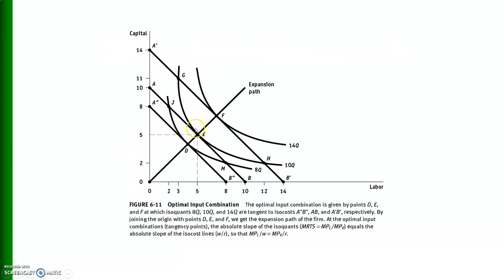In this diagram there are three different optimal input combinations, with equilibria at points E and F among others. If we connect these various optimal combinations of the two inputs — the various producer equilibria — with a line, we call that the expansion path. It shows that as more inputs and budget are available, the firm will expand along this path.